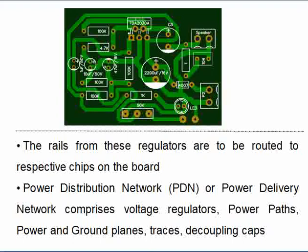From the voltage regulator module, voltage rails are routed to the respective ICs on the board. The voltage regulator modules, the traces, the planes — whether power plane or ground plane — and the wires on those traces all combine together to form a power distribution network. This describes how power is distributed across the board, and it is also called a power delivery network.